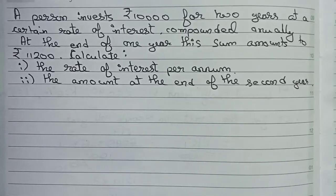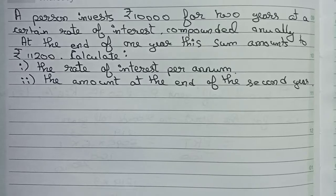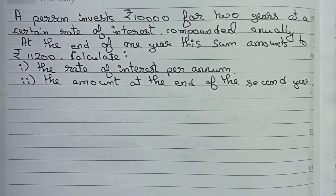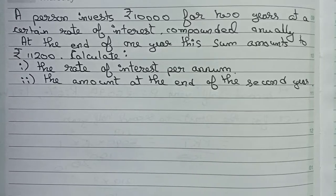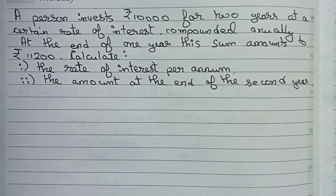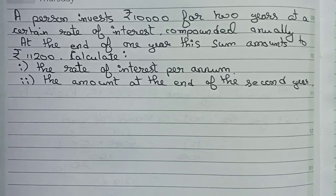Hello guys, welcome to this video. In this video, the question is: A person invests rupees 10,000 for two years at a certain rate of interest compounded annually. At the end of one year, this sum amounts to rupees 11,200. Calculate the rate of interest per annum and the amount at the end of the second year.